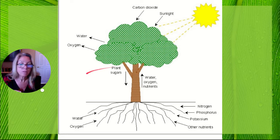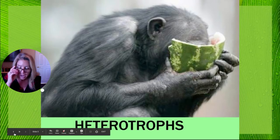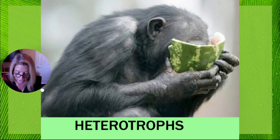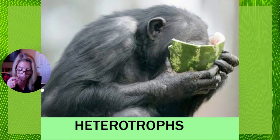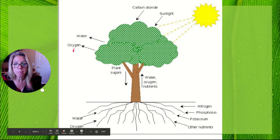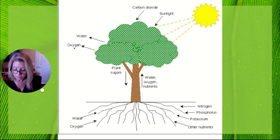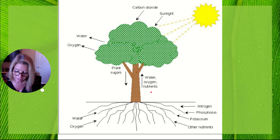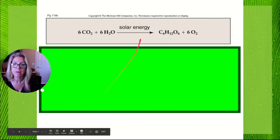Heterotrophs are consumers — they take in preformed organic molecules like plants, fungi, or animals that have eaten plants — as building blocks and as a source of energy. Oxygen, which is a byproduct of photosynthesis, allows for aerobic respiration to take place not only in animals like us but in plants as well.